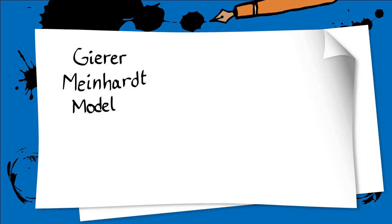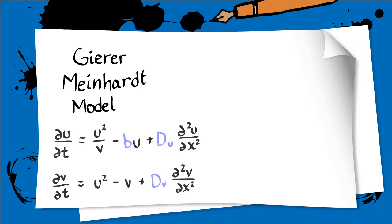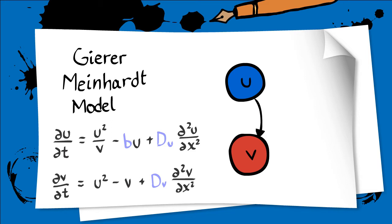One of these systems is the Gehrer-Meinhardt model for an activator-inhibitor system. This model has two chemicals that react with each other, one activator and one inhibitor. The activator will promote the production of both the inhibitor and itself, whereas the inhibitor will increase the rate of degradation of the activator.